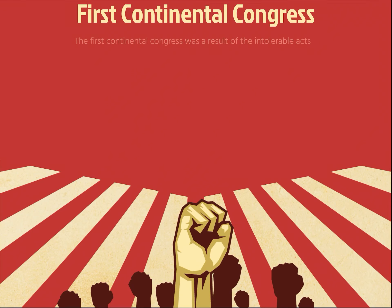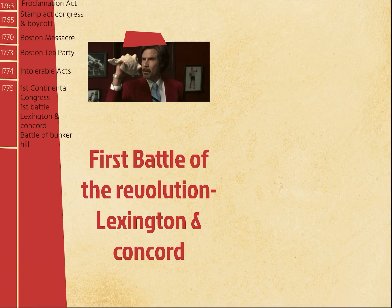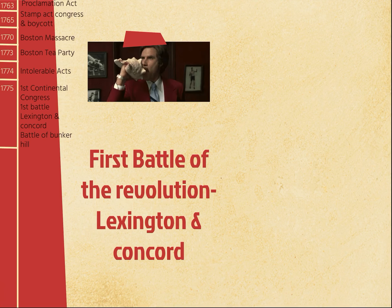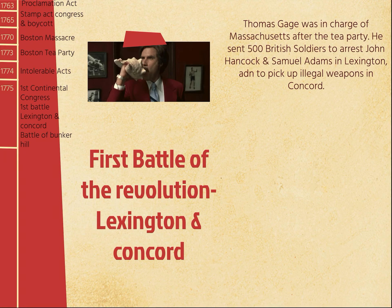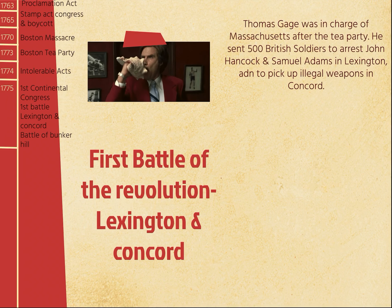The First Continental Congress happens as a direct result of the Intolerable Acts. Twelve of the thirteen colonies got together to discuss their problems with Great Britain, and the first battle of the revolution happens not long after. This is going to be the Battle of Lexington and Concord.